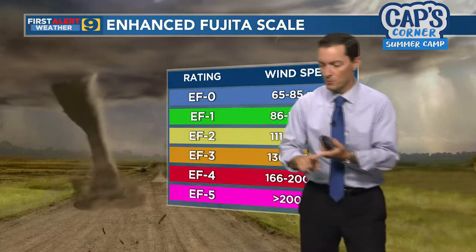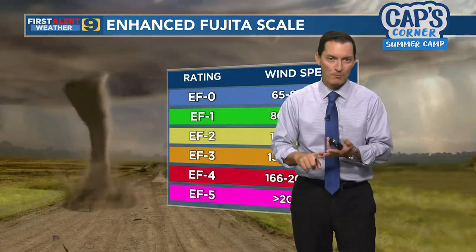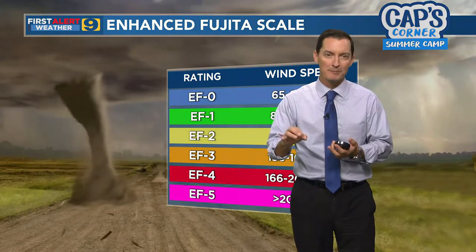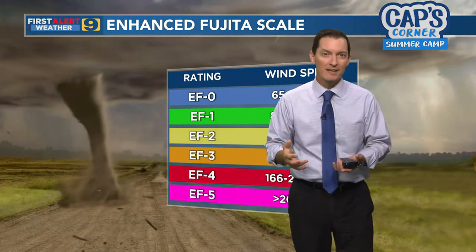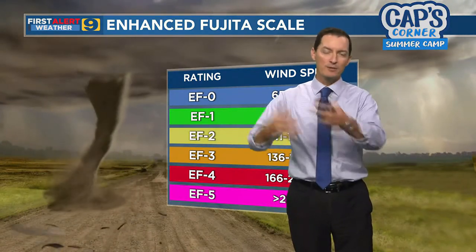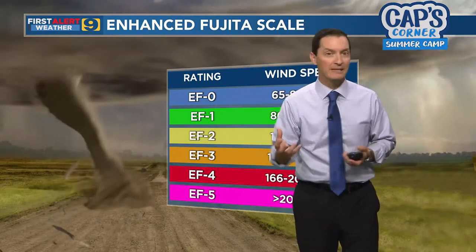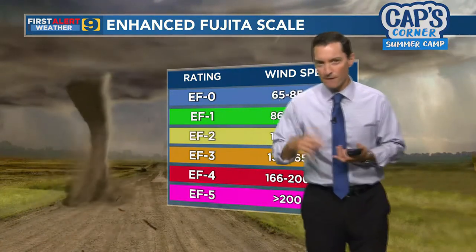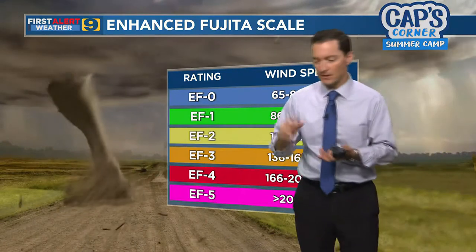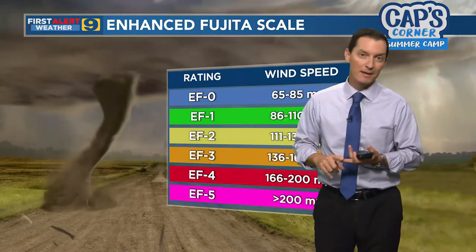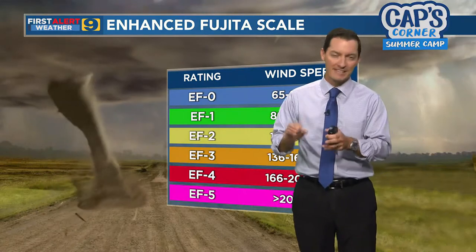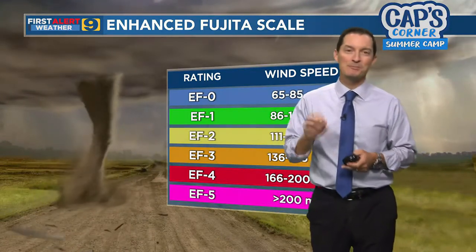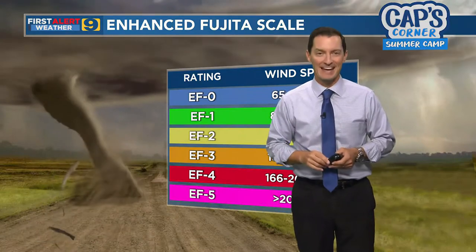Now that we've talked about how tornadoes form and how we rank them, let's jump into my home lab and I'm going to show you an easy experiment. You can do this with mom and dad — make a little tornado at home. If you can get a two-liter bottle, an empty bottle, maybe a mason jar, and some water, join me in the home lab as we show you how to make a tornado at home.